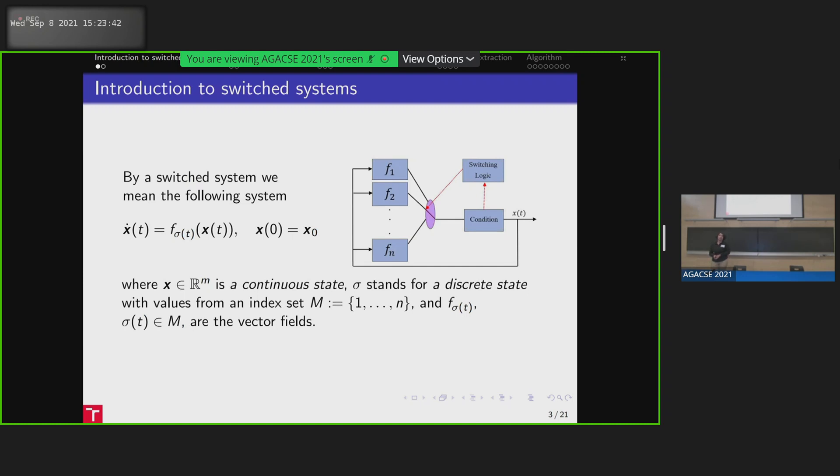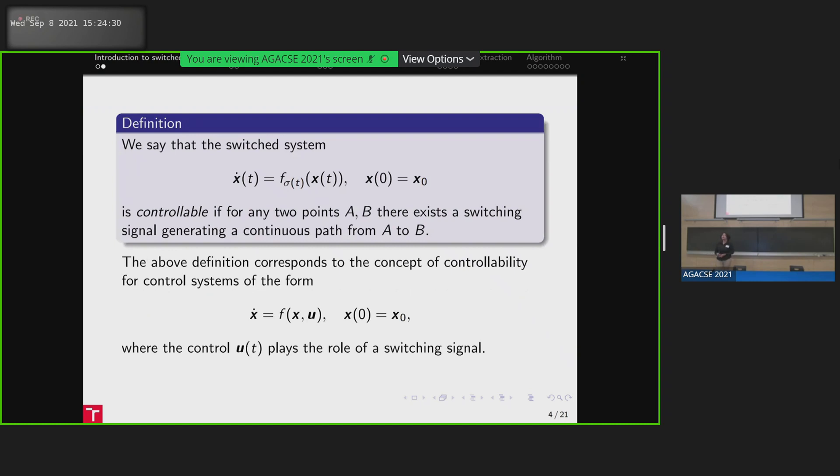When you hear the term switched systems what first comes to your mind? Maybe some engineering system, maybe some traffic lights. There are lots of applications. But generally by switching system we mean the dynamical system with continuous and discrete state. So as you can see the system has discrete switch sigma from t and continuous parts. So we have a few continuous parts and in the moment of switch we have some external conditions.